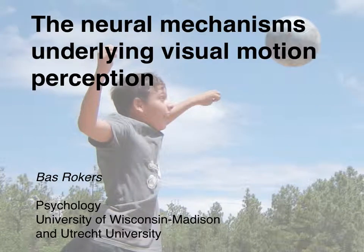This video will be about using neuroimaging, and specifically fMRI, to understand and uncover the neural mechanisms underlying visual motion perception. My name is Bas Rokers. I'm an assistant professor at the psychology department at the University of Wisconsin-Madison and Utrecht University in the Netherlands.